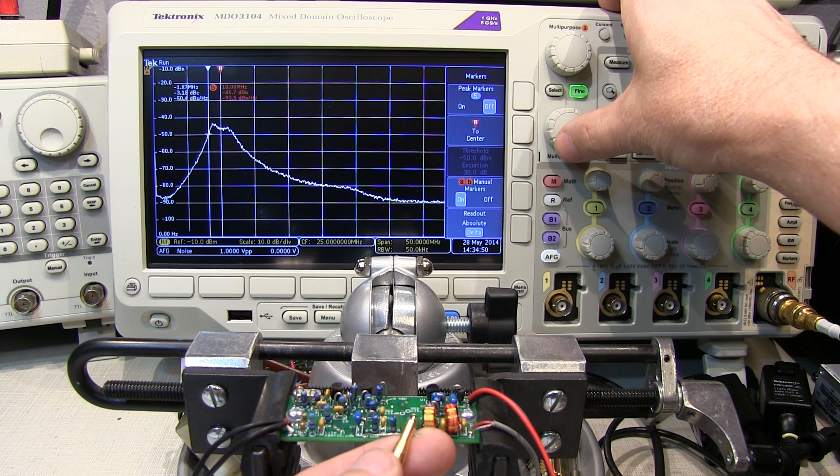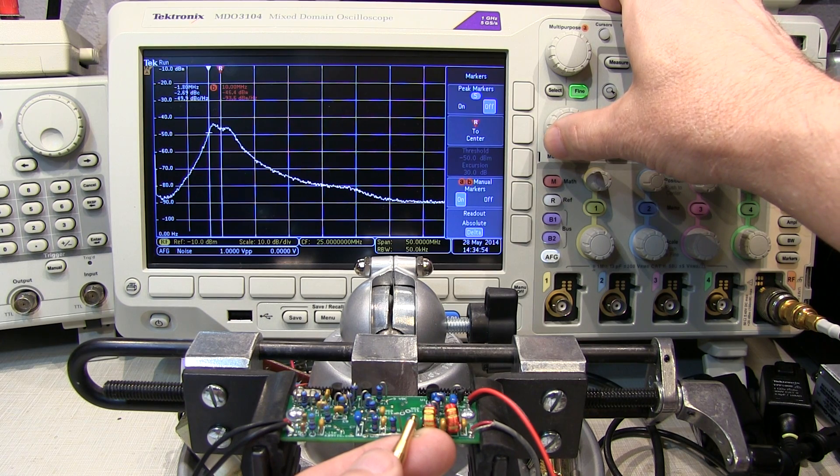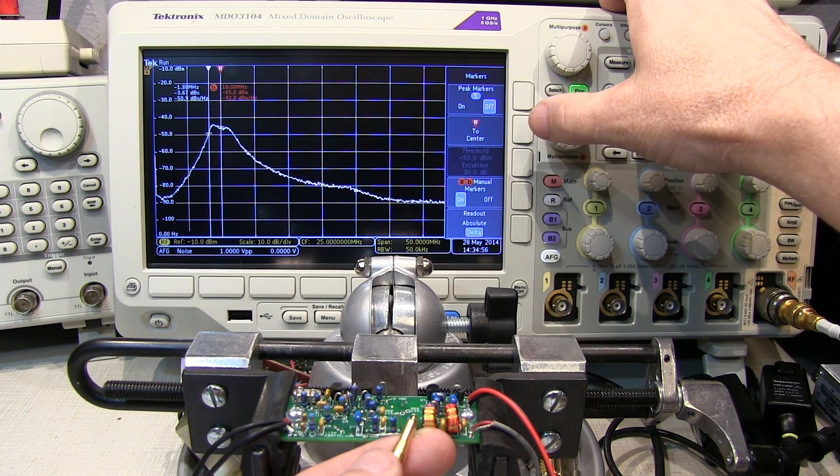And we're about 3 dB down at about 1.8, 1.7, 1.8 MHz below 10 MHz.